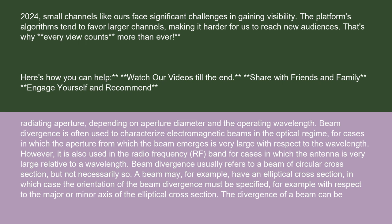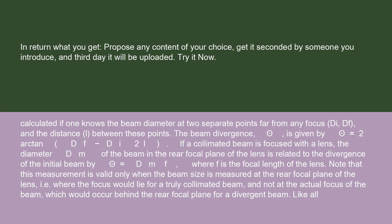The divergence of a beam can be calculated if one knows the beam diameter at two separate points far from any focus, D_i and D_f, and the distance L between these points. The beam divergence theta is given by: theta = 2 arctan((D_f − D_i) / (2L)).